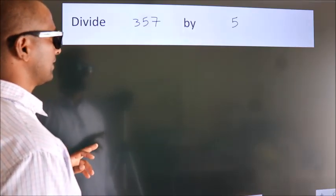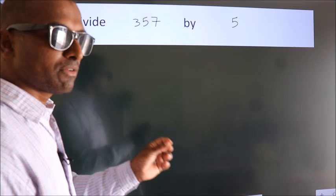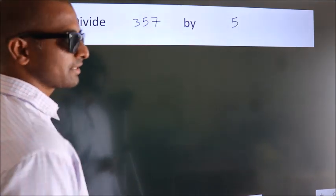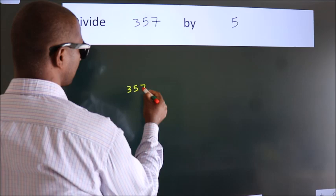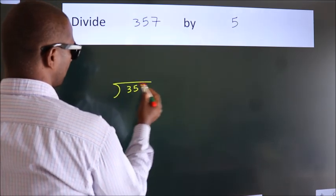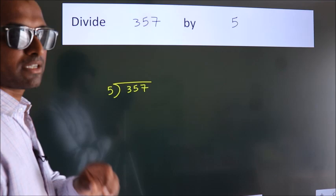Divide 357 by 5. To do this division, we should frame it in this way. 357 here, 5 here. This is your step 1.